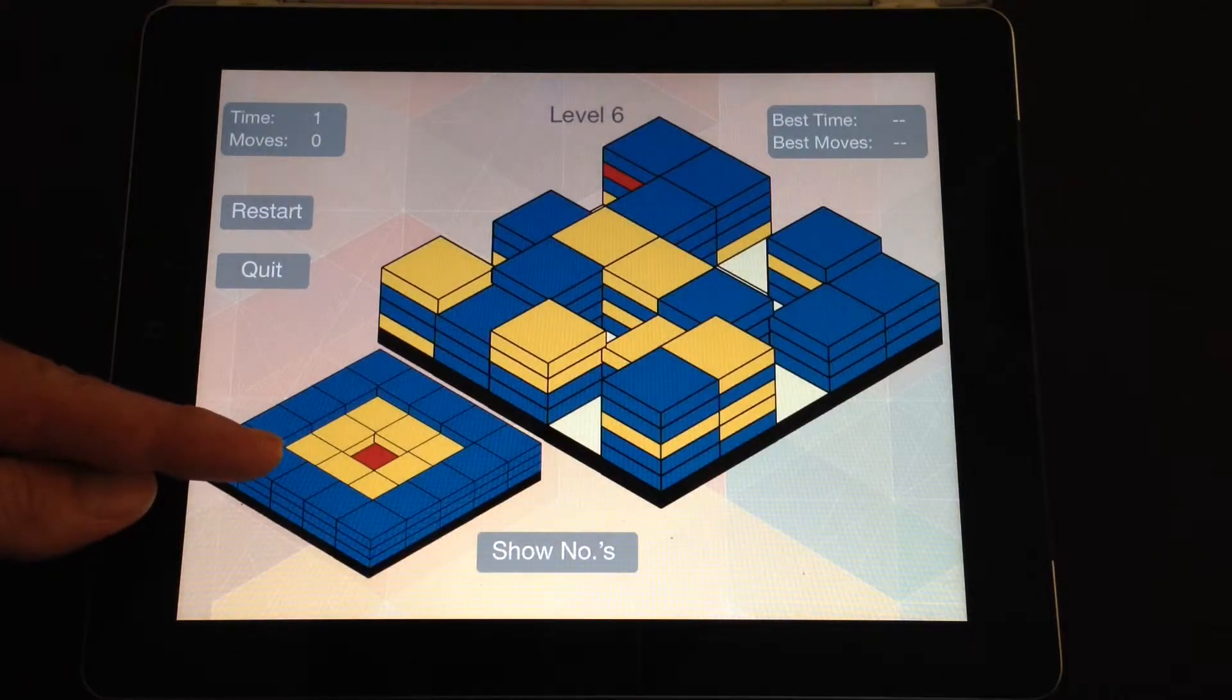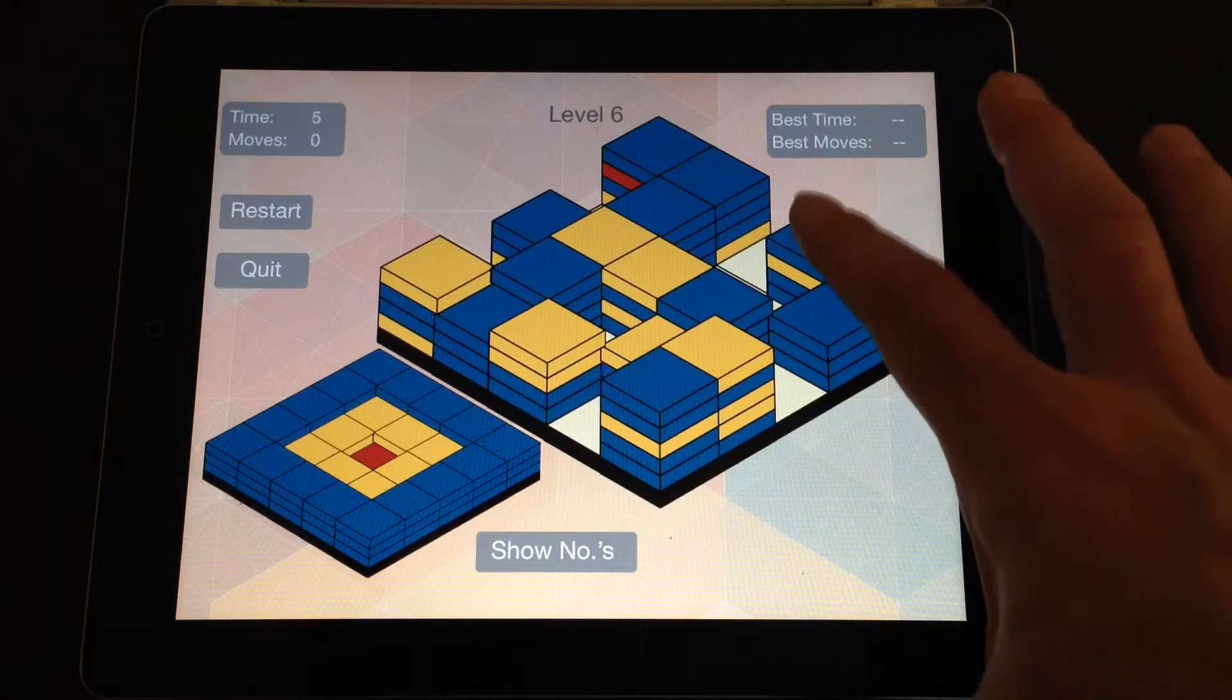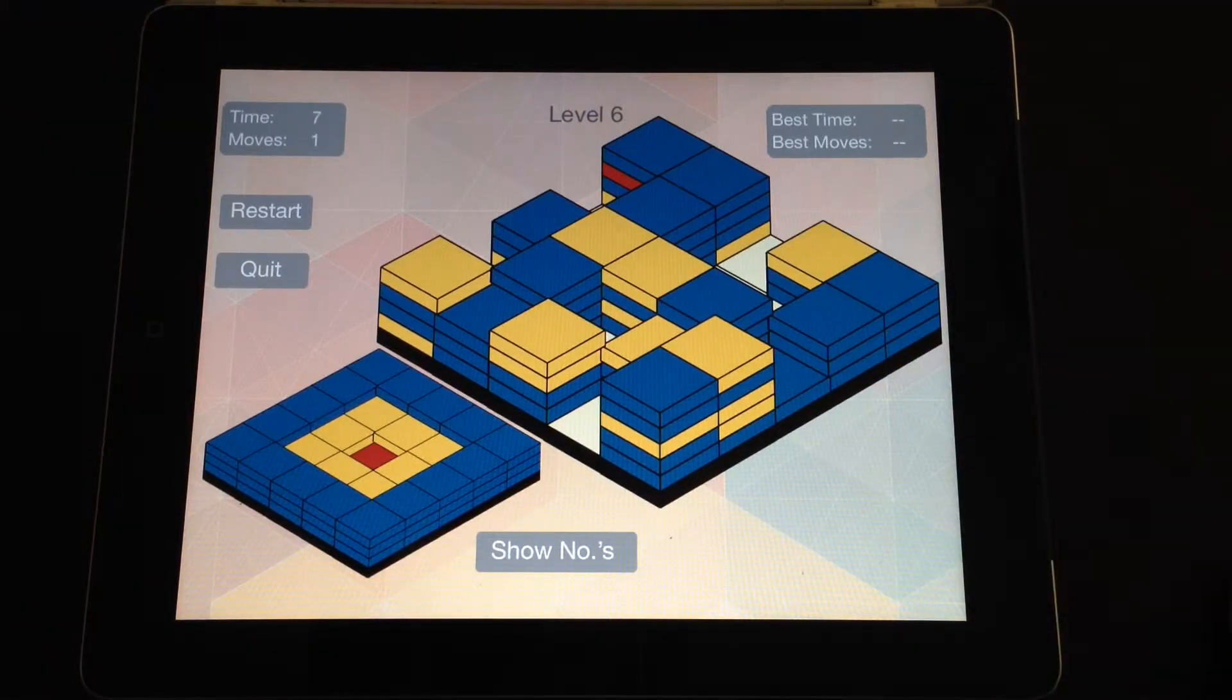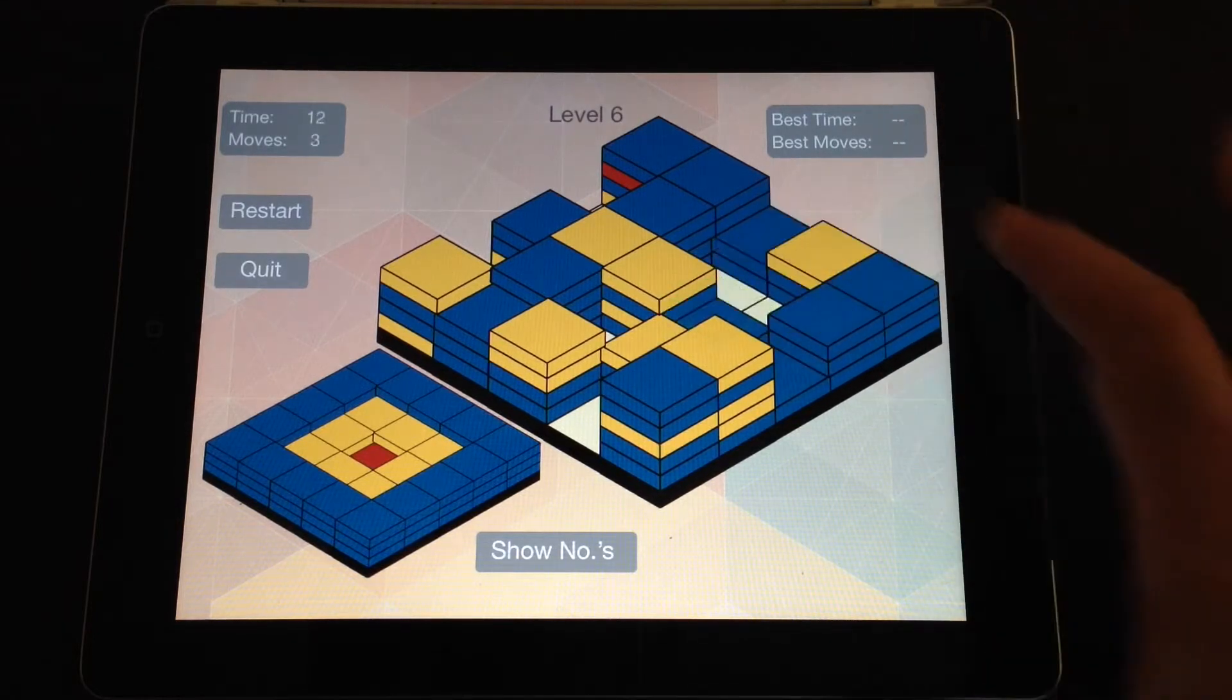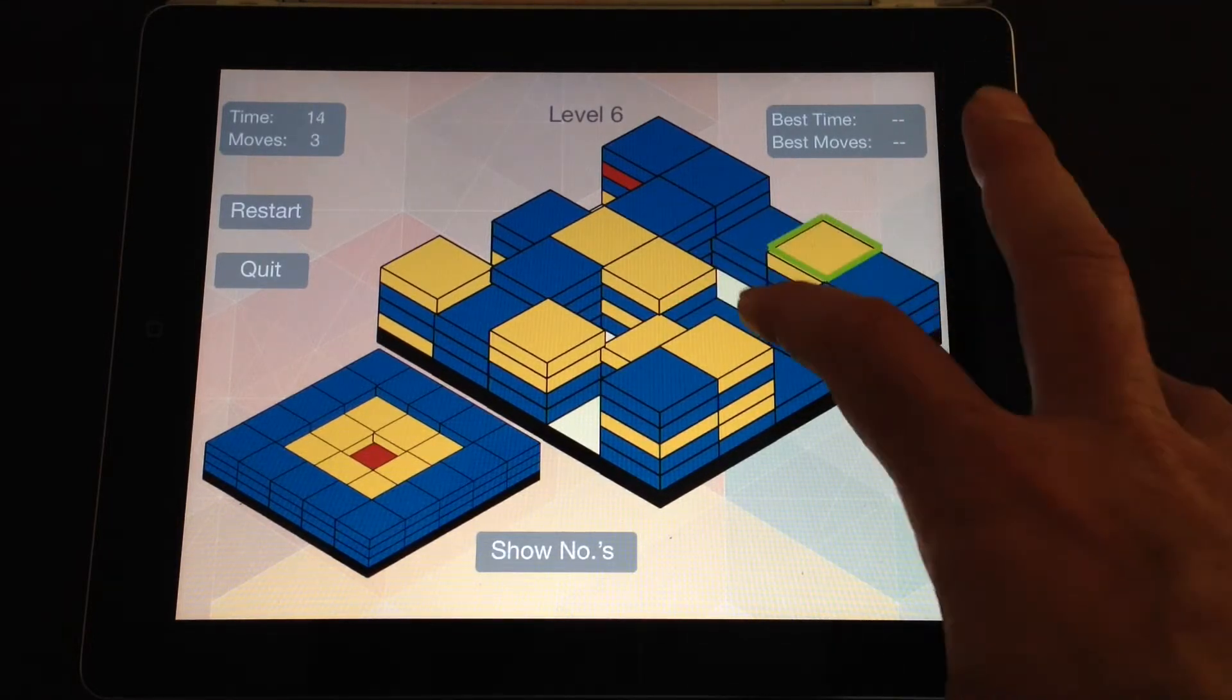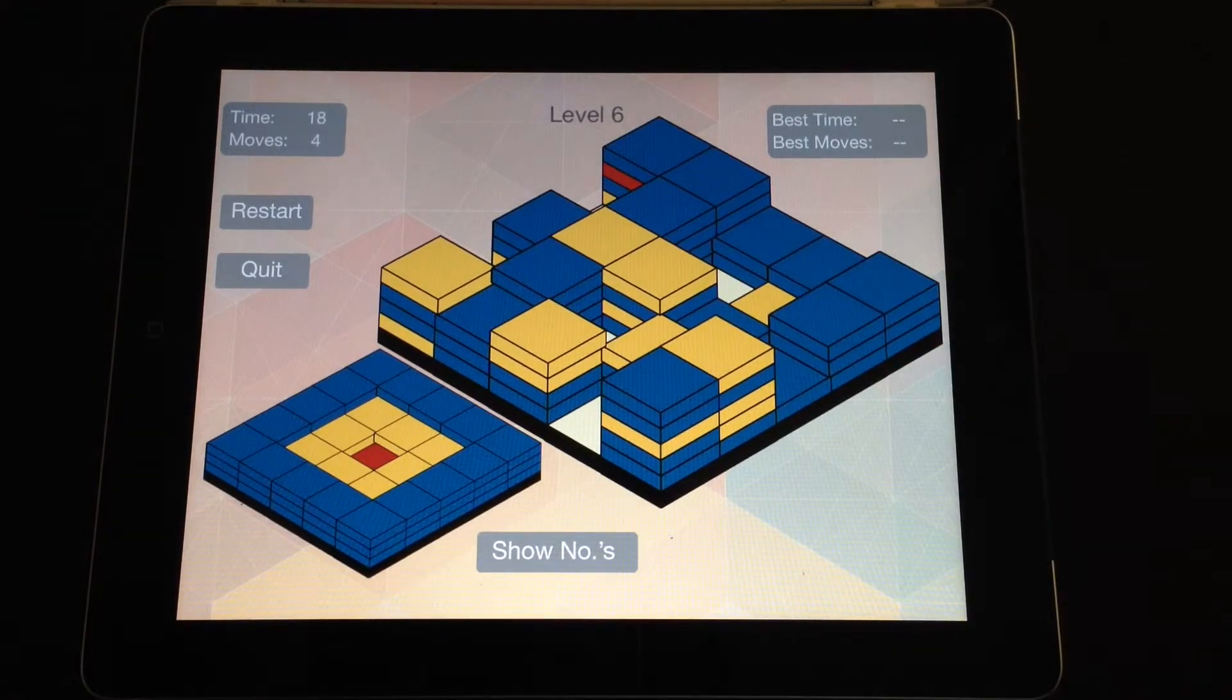It shows you what you're trying to achieve down here, and you basically tap on a brick that you want to move, and then move it somewhere, and that's how the game operates. So you just move the tiles as required to match the pattern down in the corner there, and you keep going until it's done.